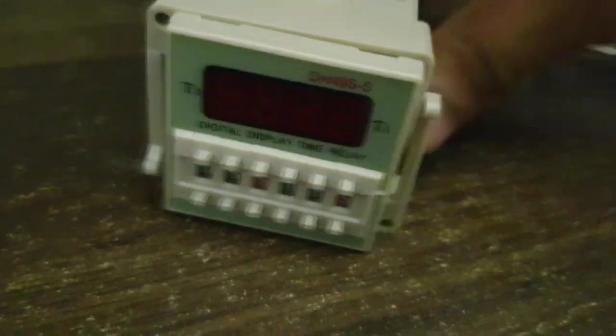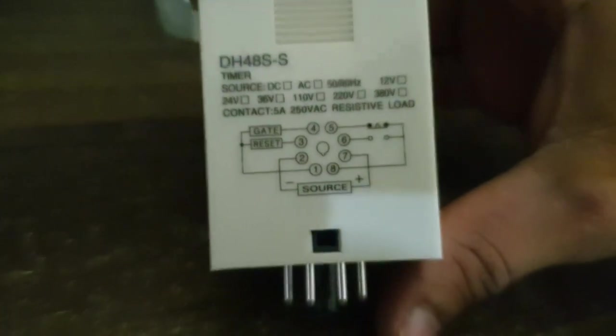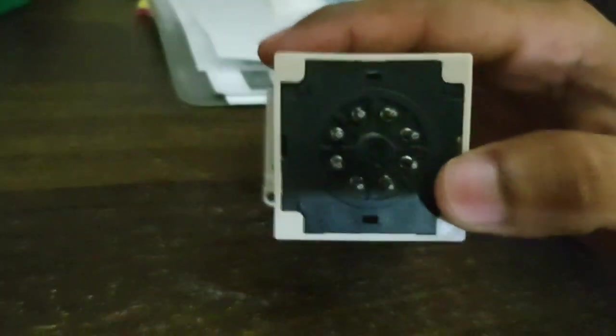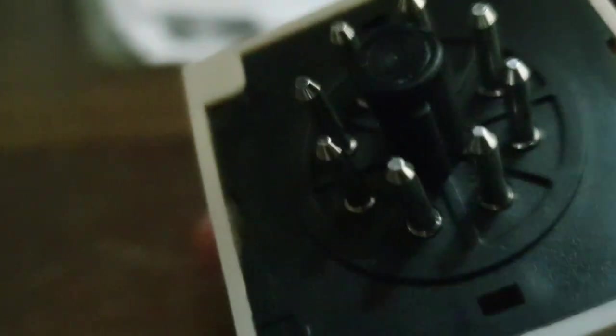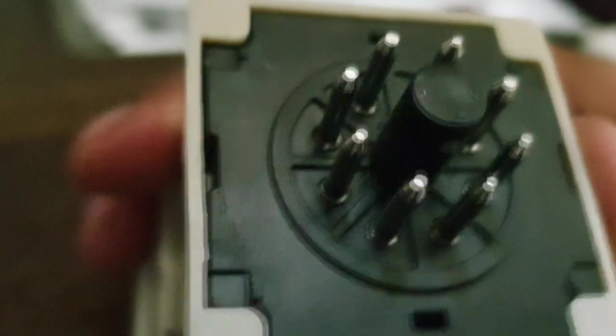Today I got this timer relay. It's got a timer on it. On the back side, there's a circuit diagram showing six pins, each numbered. You can see numbers one, two, three, six, and eight.